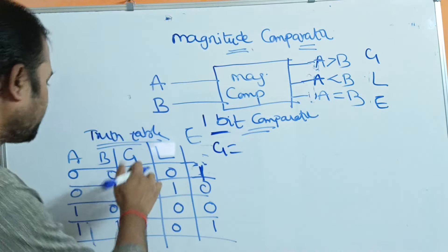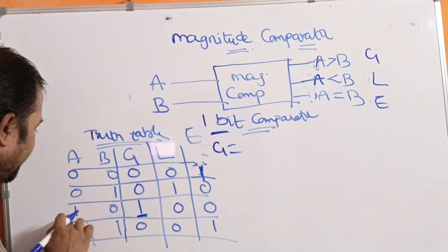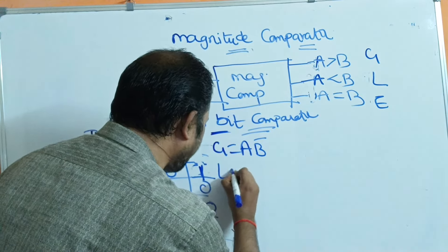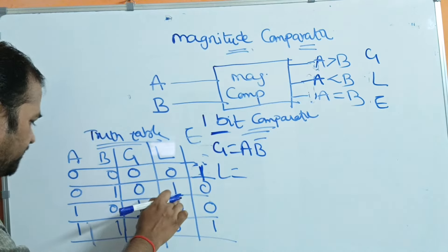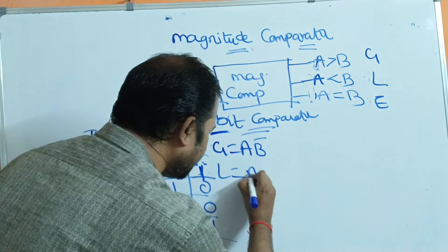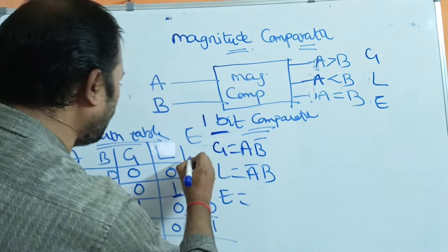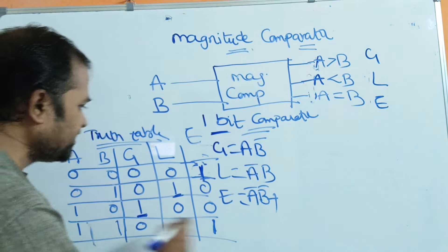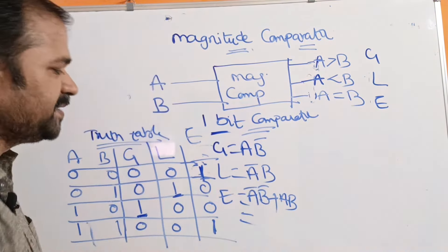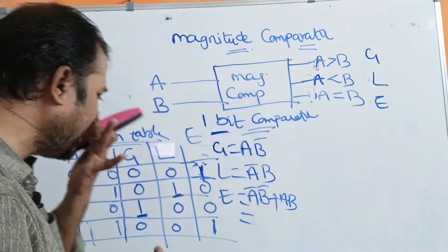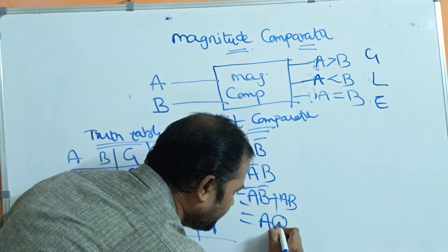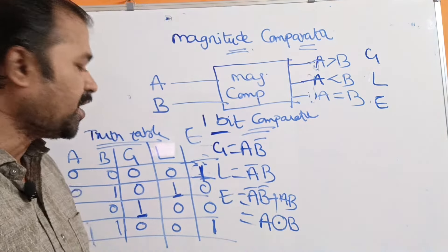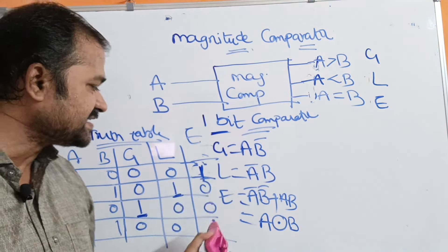G is equal to A·B̄. Next, L is equal to Ā·B. If we observe the E column, we have two ones: at 0-0, which means Ā·B̄, and at 1-1, which means A·B. So E equals Ā·B̄ + A·B, which is the formula for A exclusive-NOR B. The exclusive-NOR is represented by the XOR symbol with a circle — this is the exclusive-NOR symbol.